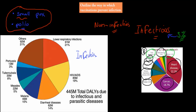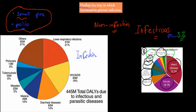The reason why this shift happened is largely because of vaccines — not the only reason, but one of the main reasons. The learning objective here is to outline the ways in which vaccinations prevent infection, and that's what we'll cover in this video.